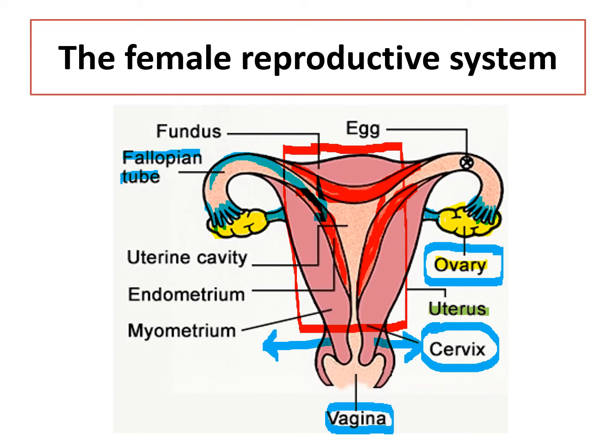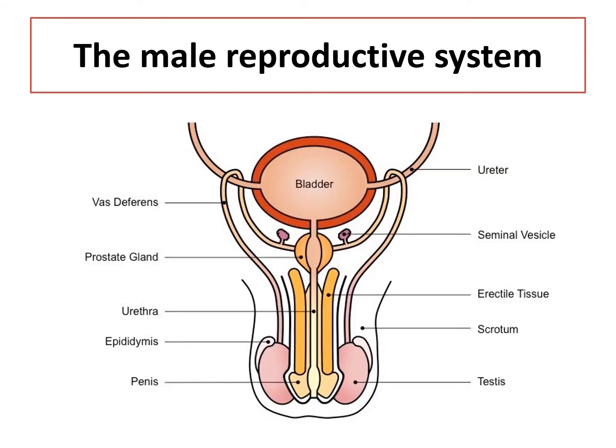So this is the structure of the female reproductive system. The most important organs include the uterus, the ovary, the fallopian tube, and the vagina. Next, we are going to look at the structures of the male reproductive system, starting with the testis.